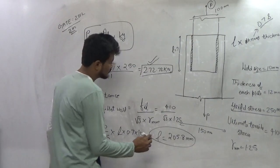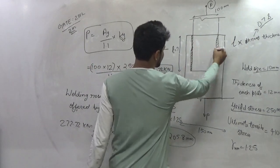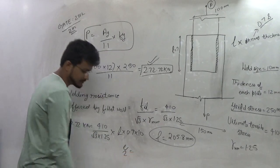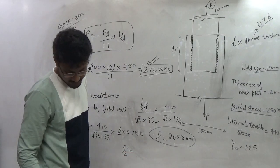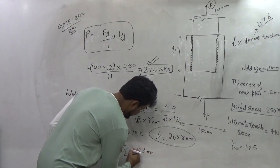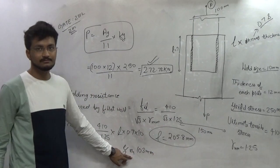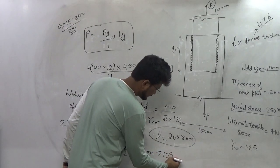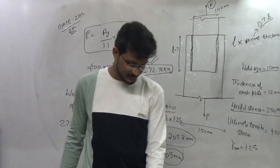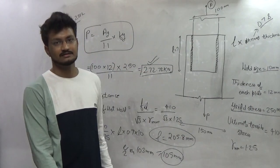Now the summation of these two is 205.8. So therefore one side length will be equals to L by 2 and which comes approximately equals to 103 mm. And the next higher 5 multiple will be equals to 105 mm. So therefore as per the options option B is the right answer.